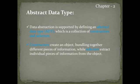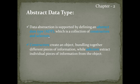Next is abstract data type. Data abstraction is supported by defining an abstract data type. Simply, it is a data type which is a collection of constructors and selectors. That means the data abstraction concept is implemented by defining a data type that is called an abstract data type.